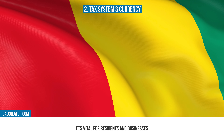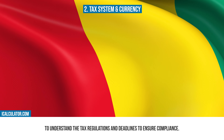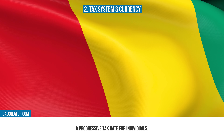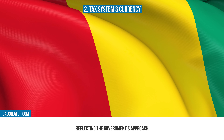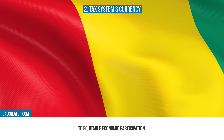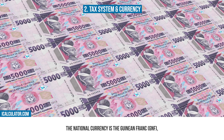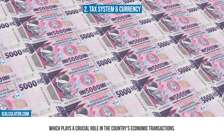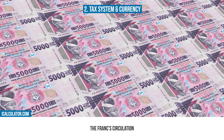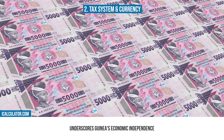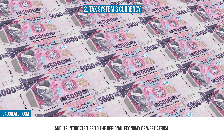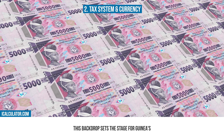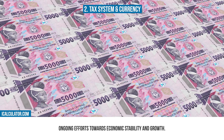It's vital for residents and businesses to understand the tax regulations and deadlines to ensure compliance. Guinea employs a progressive tax rate for individuals, reflecting the government's approach to equitable economic participation. The national currency is the Guinean franc, GNF, which plays a crucial role in the country's economic transactions. The franc's circulation underscores Guinea's economic independence and its intricate ties to the regional economy of West Africa, setting the stage for ongoing efforts towards economic stability and growth.